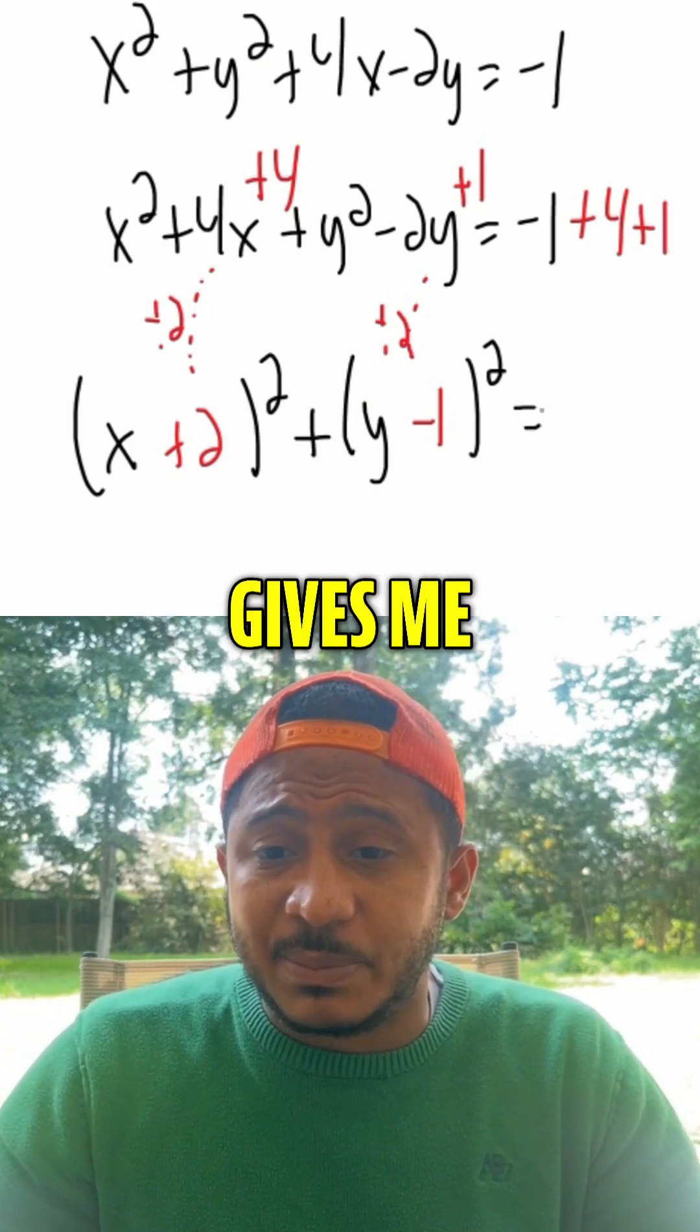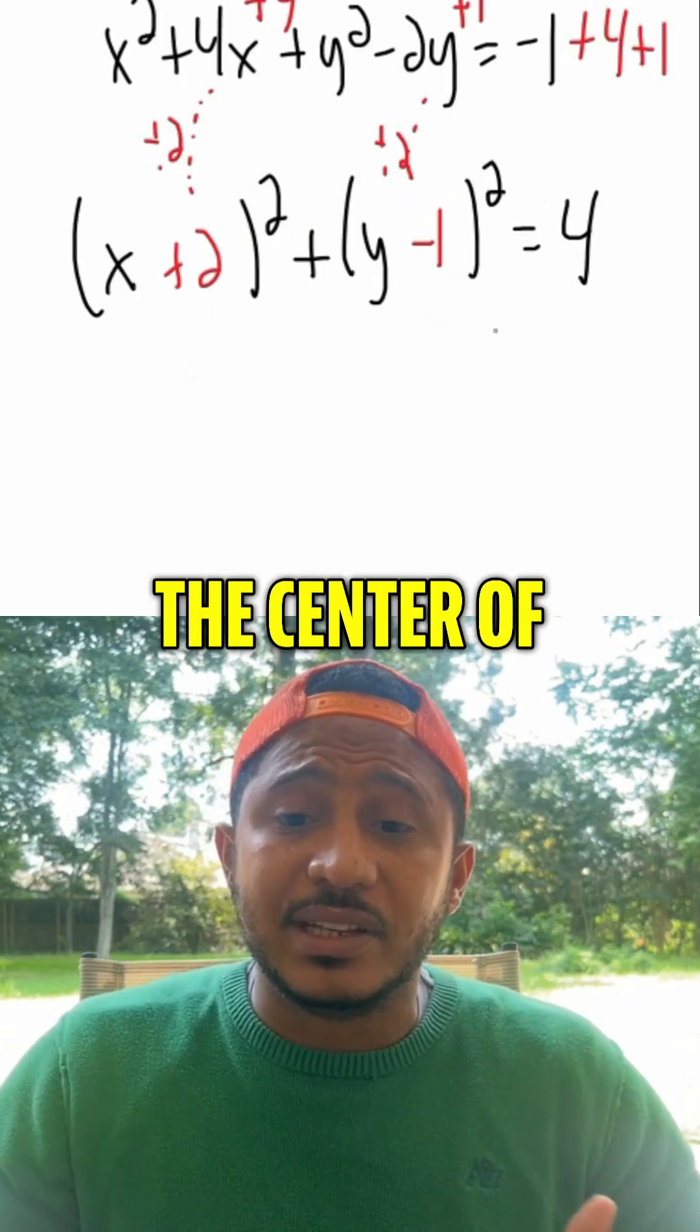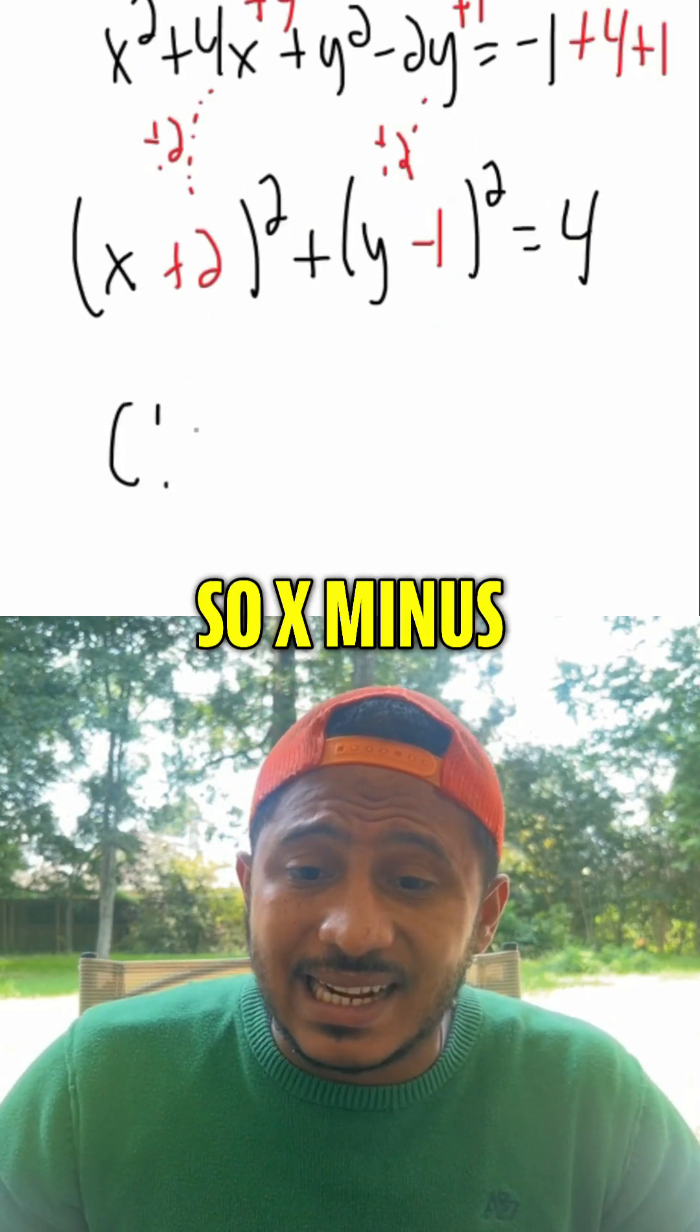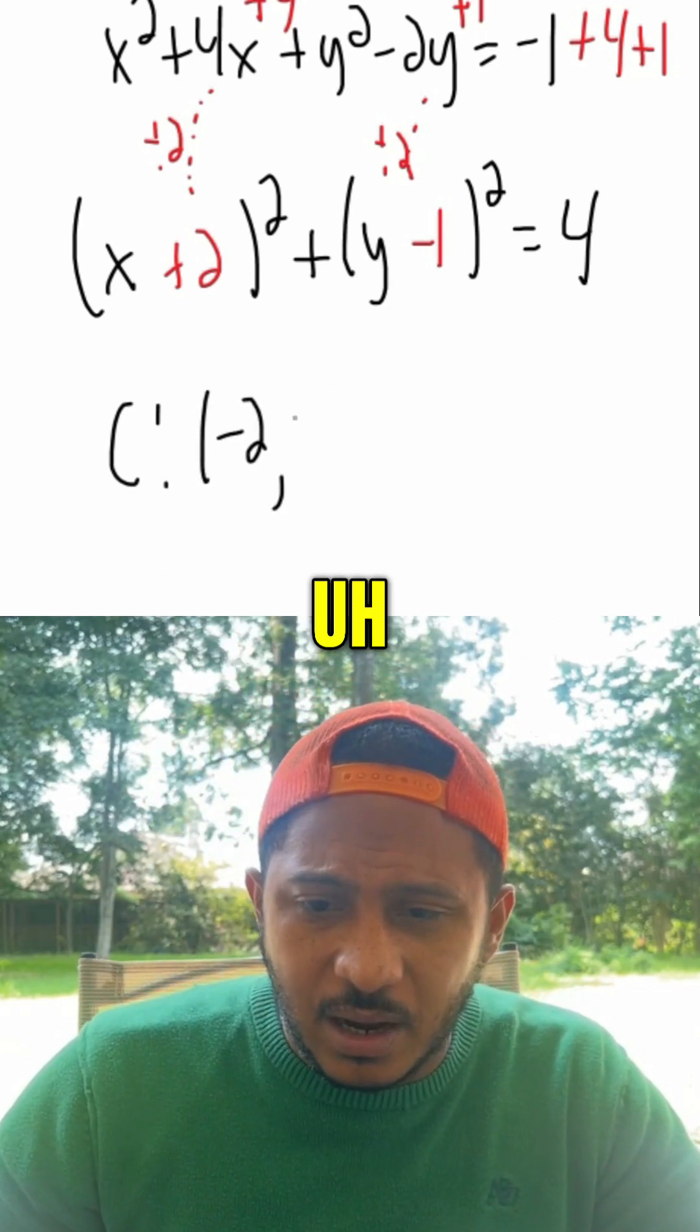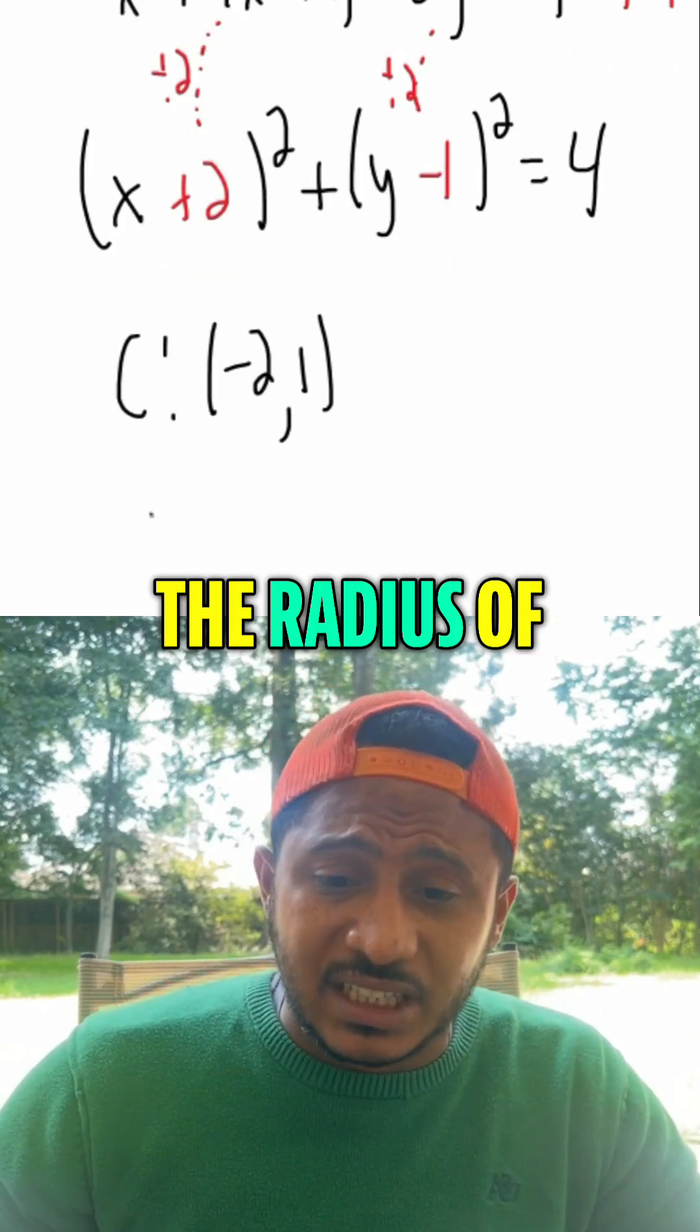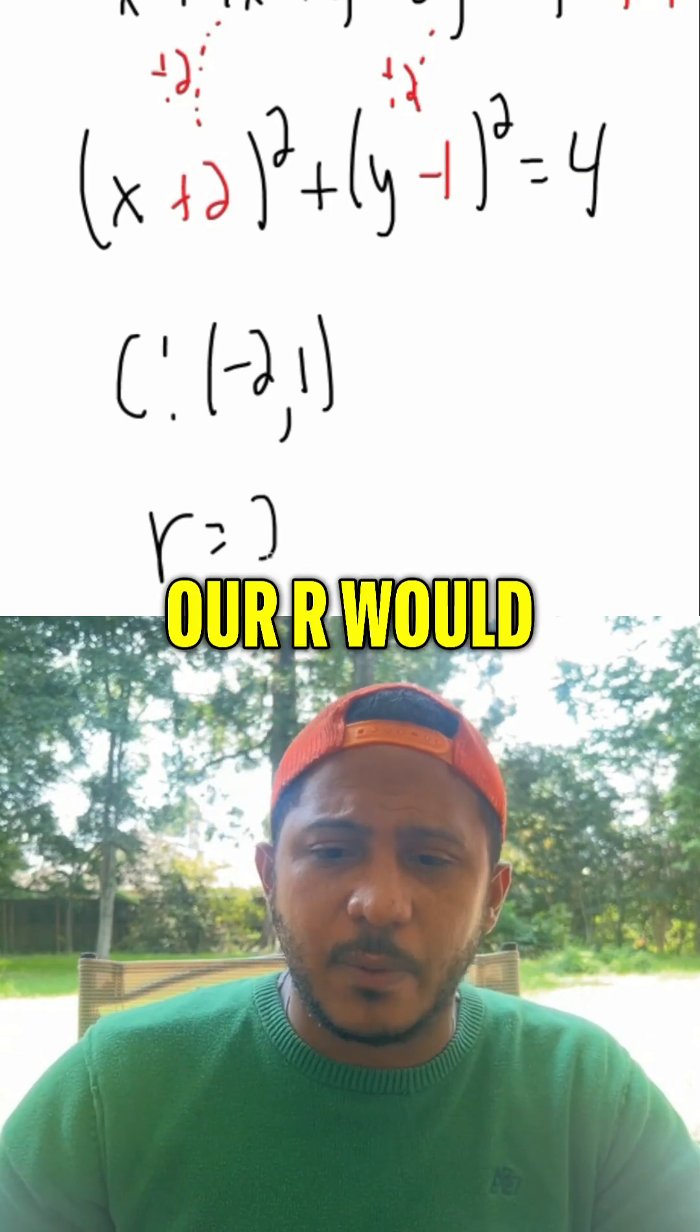So on the right-hand side, that gives me negative 1 plus 1 plus 4, so 4. So now we know the center of our circle would be x minus h, so x minus negative 2, so negative 2, and then squared plus y minus k, so that would be y minus 1. So that would be the center of our circle, but we're really worried about the radius. The radius of our circle would be, this is r squared, so here r would be 2.